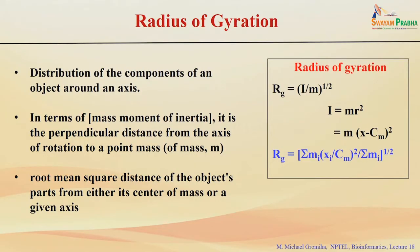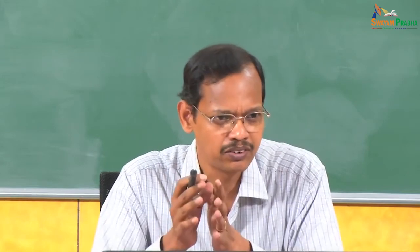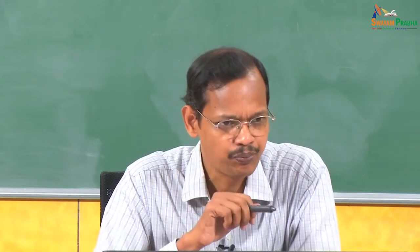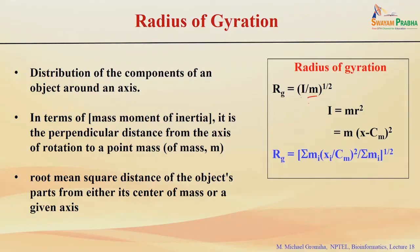Then we can also derive the radius of gyration. What is the radius of gyration? It is the distribution of the components of an object around any axis. If you take the moment of inertia, it is the perpendicular distance from the axis of rotation to any point mass. You can calculate the radius of gyration using: Rg equals square root of I divided by m, where I is the moment of inertia and m is the mass. The equation for moment of inertia is I = m·r², where r² can be calculated from the center of mass as (x minus cm)².